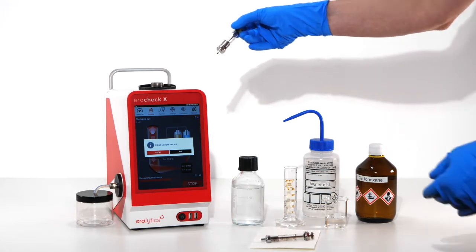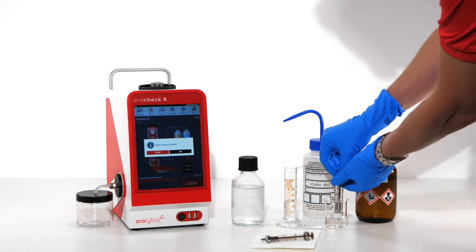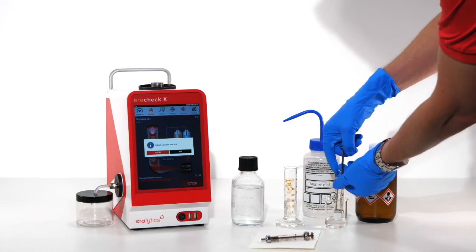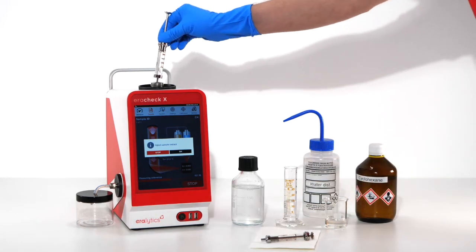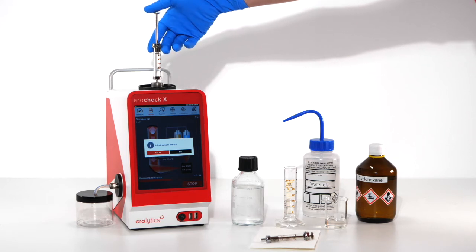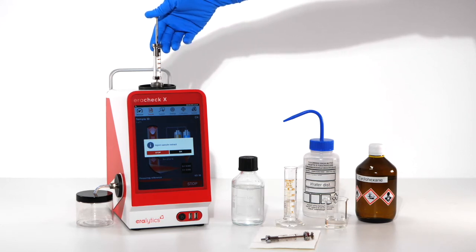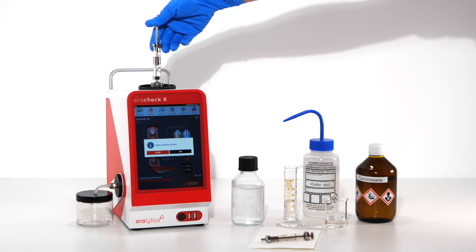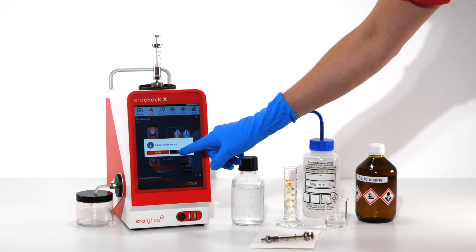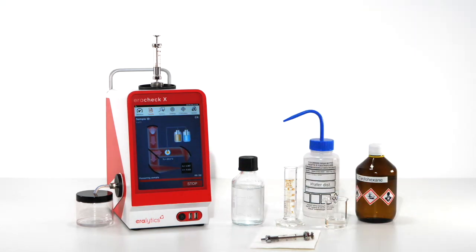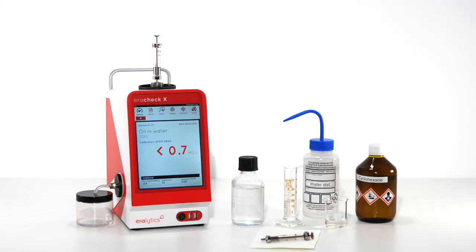Then refill the syringe, attach it to the inlet assembly. Inject another 5 ml of cyclohexane and click OK to proceed. The instrument has now been verified.